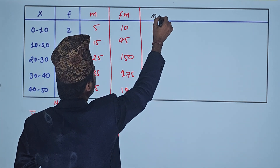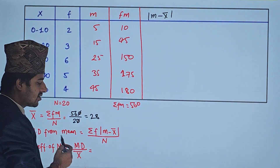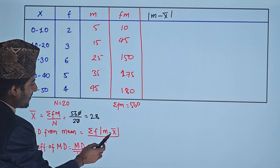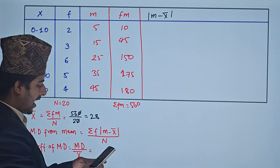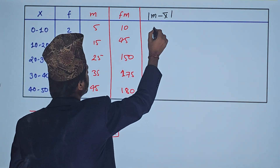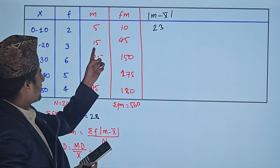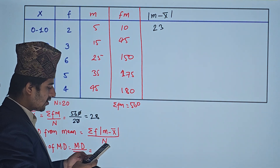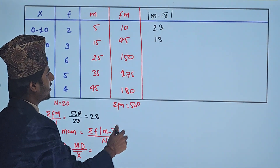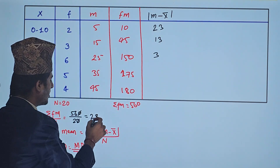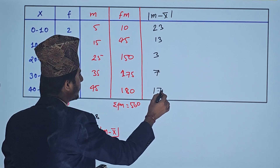Now we calculate |m − x̄| for each class. Using mean = 28: |15 − 28| = 13, |25 − 28| = 3, |35 − 28| = 7, |45 − 28| = 17. The modulus values are 23, 13, 3, 7, and 17.